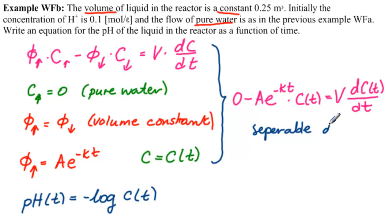Why? Because this is all by itself t, so I can multiply it by dt, and this is all by itself C, so I can divide it to get dC over C. So I would have minus A e to the minus kt times dt equals V times dC over C. This is separable. Let's integrate.